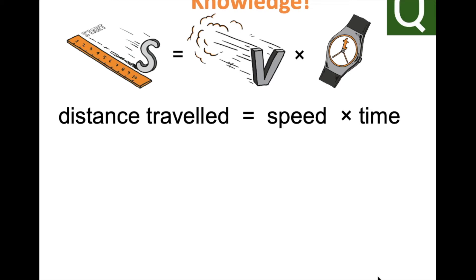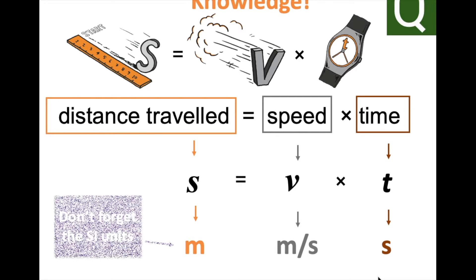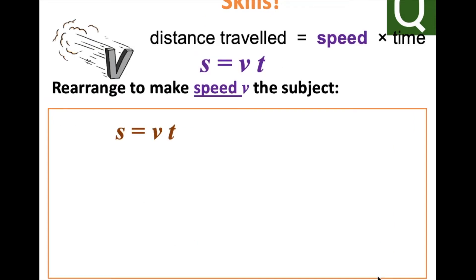Hello, welcome to another quick science video. Today we are looking at the physics equation for AQA science which is linking distance traveled, speed, and time. To start off, we will look at the SI units. Distance is measured in meters, speed is in meters per second, and time is in seconds.